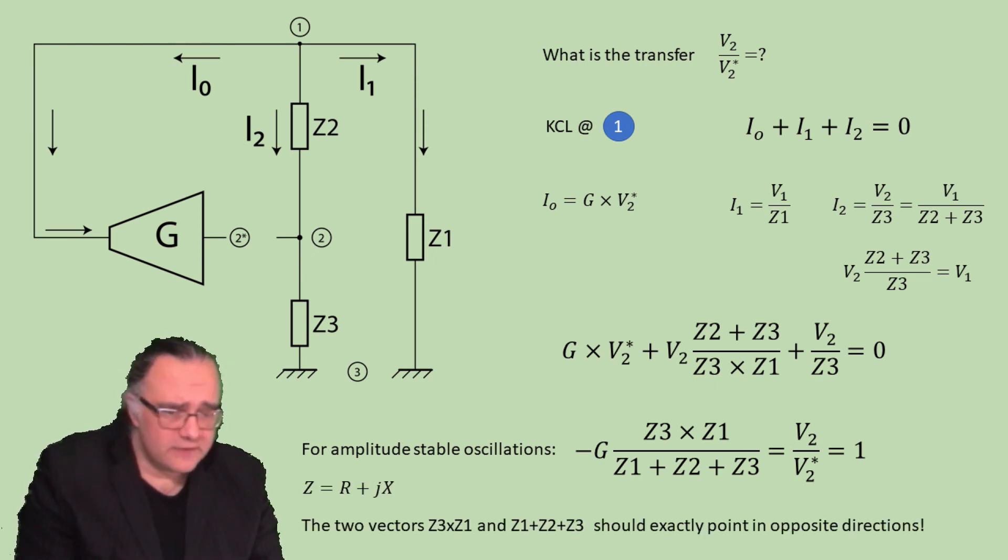So in the numerator and denominator we have two vectors. One is Z3 times Z1, a complex number. And Z1 plus Z2 times Z3, another complex number. For their ratio to be a real number, minus 1 for example, we require that both vectors should point exactly in the opposite directions.